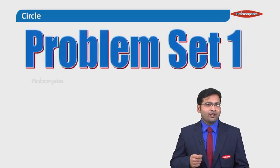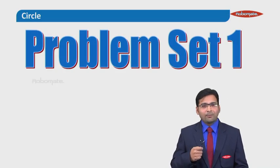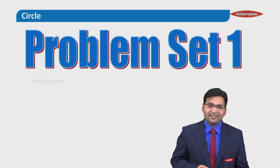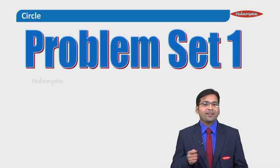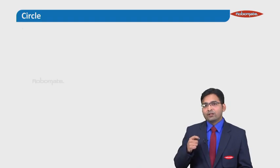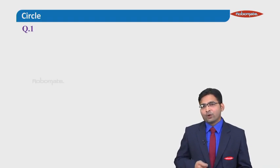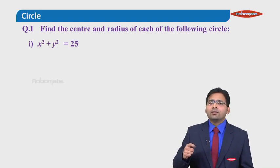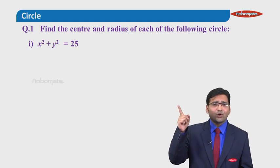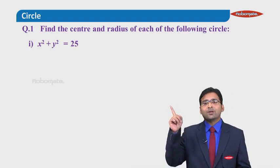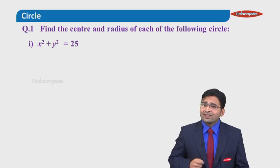Let us see if we can face some problems and crack them immediately. Are we ready with pen and paper? Let us go ahead. The first question says: find the center and radius of each of the following circles. The first one is x squared plus y squared equals 25.